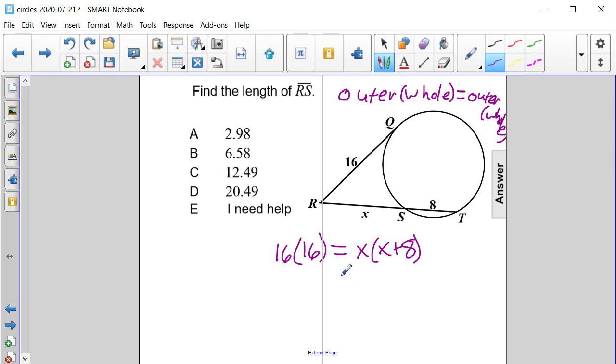Now let's use the distributive property to distribute the X through on the right, and we would get X squared plus 8X. And when we square 16, or multiply it by itself, we end up getting 256.